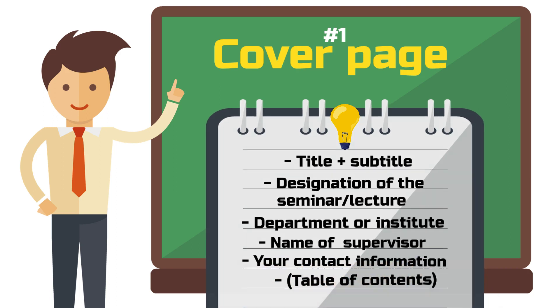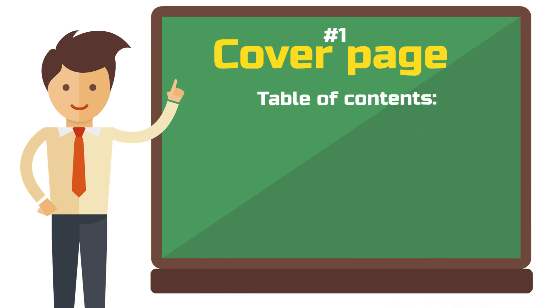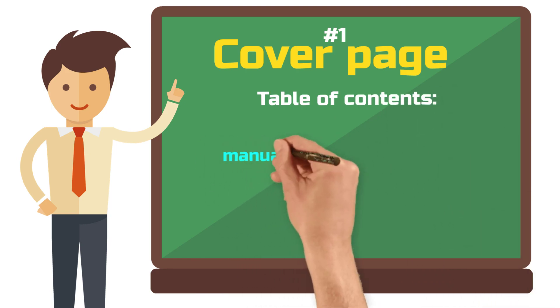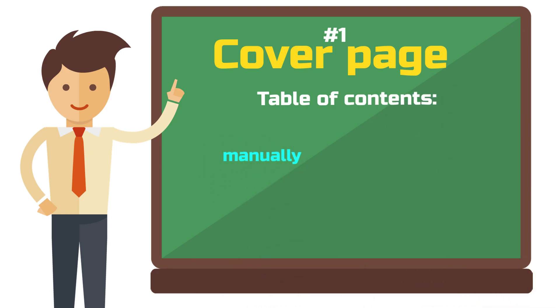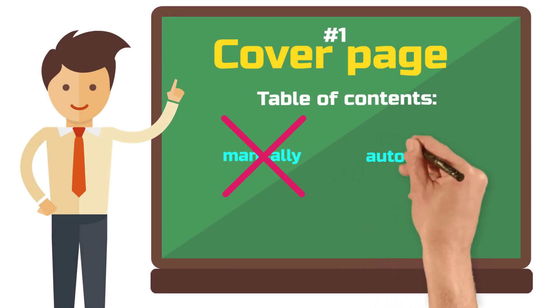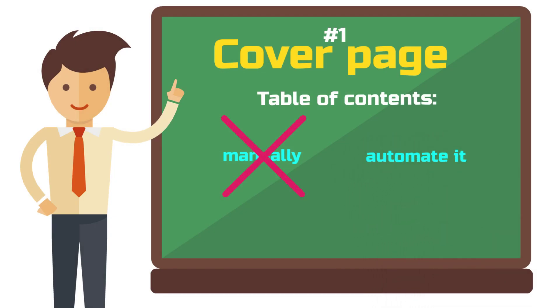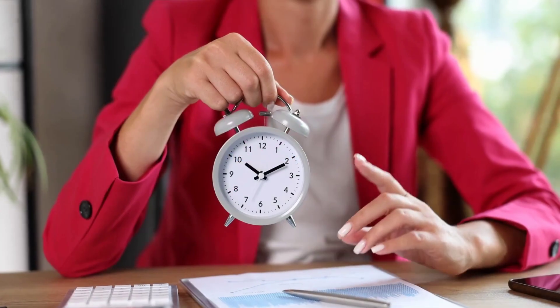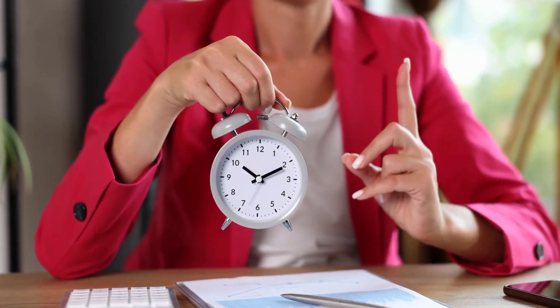Optionally, include a table of contents. At the beginning of my studies I usually manually tinkered with my table of contents using OpenOffice — not a good idea. Ask ChatGPT or watch a tutorial on YouTube on how to automatically create your table of contents in Word. This is a huge relief and saves you so much time. The page numbers are always correct and you don't have to worry about anything anymore.